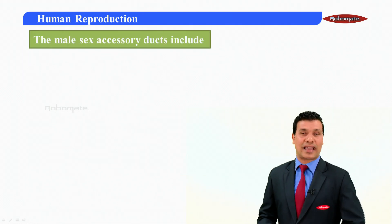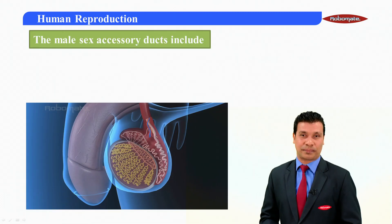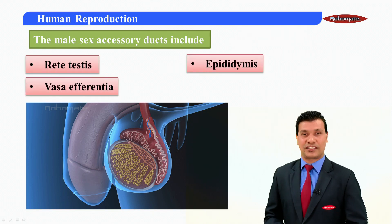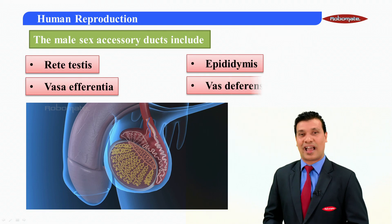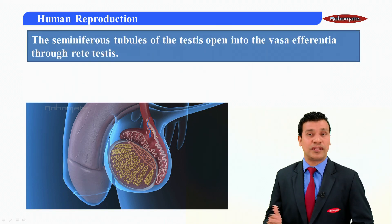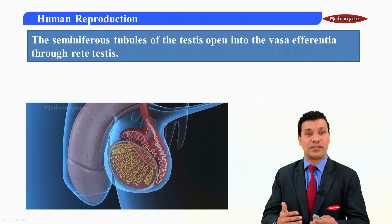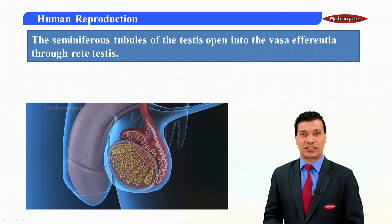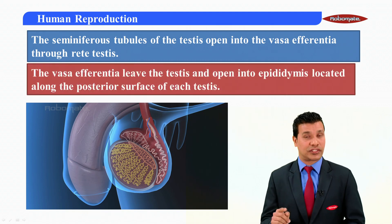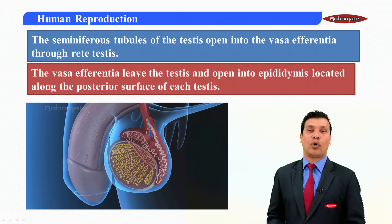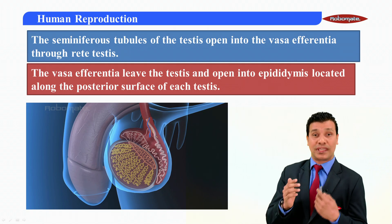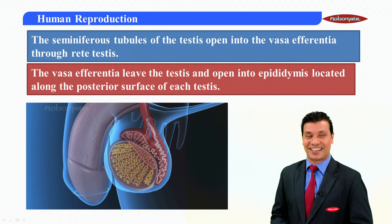The main sex accessory ducts include the rete testis, the vasa efferentia, the epididymis, and the vas deferens. The seminiferous tubules of the testes open into the vasa efferentia through the rete testis. The vasa efferentia leave the testes and open into the epididymis, located along the posterior surface of each testis.